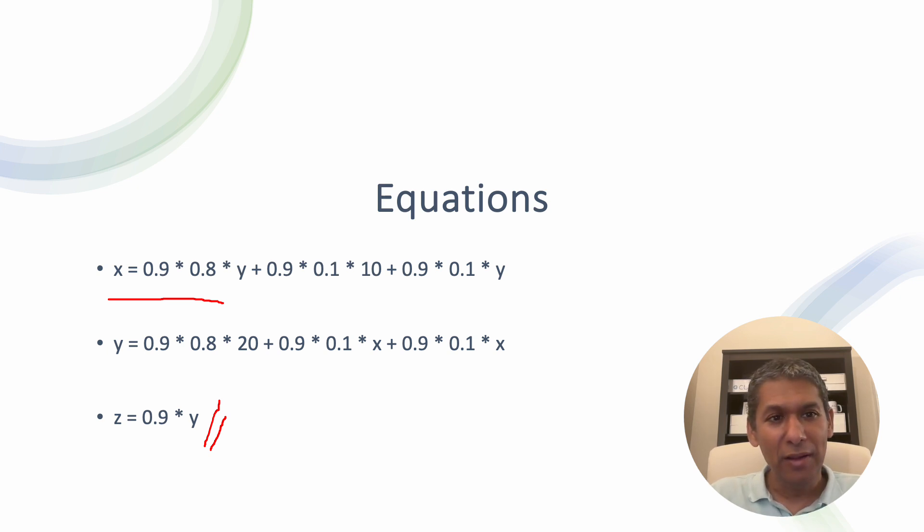From Y, there's an 80% chance we'll get to 20, but there's a 10% chance that we'll get to one of the X, so 10% chance that we'll get to the other X, and still there's a 0.9 discount rate applies as well, so that's the common. From X, there's 80% chance or 0.8 times that we'll get to Y. 10% chance that we'll get to the top 10, 10% chance that we'll get to the left 10. So therefore, these are the equations that we come up to.